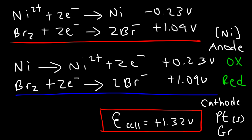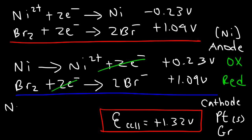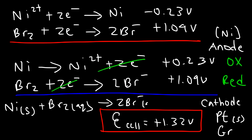Writing the overall net reaction by cancelling electrons: on the left side we have solid nickel reacting with aqueous bromine (Br2). On the right side we have two bromide ions in aqueous solution and the Ni 2+ ion in aqueous solution. That is the overall reaction for this example.